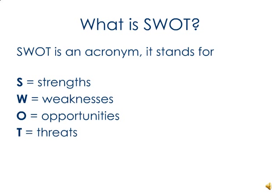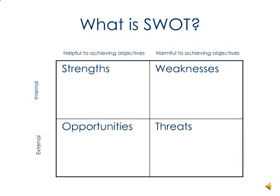The best way of picturing these four elements is as a table. In this table, the top two aspects are Strengths and Weaknesses. These are internal — Strengths and Weaknesses are all about the internal nature of your organisation: its strengths, its weaknesses, nothing else.